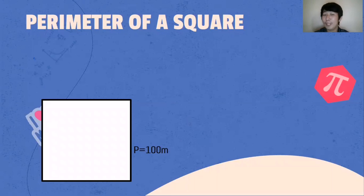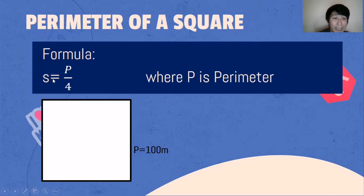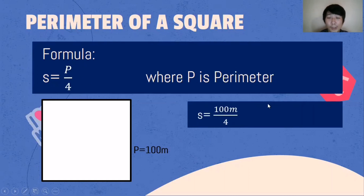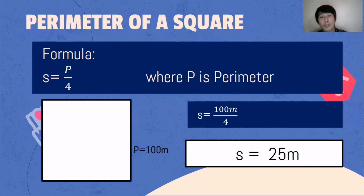Next, what if the perimeter is given and the side is missing? The formula to be used is: Side = Perimeter ÷ 4. For example, the perimeter is 100 meters divided by 4, which is 25 meters. To find the perimeter of a square, simply multiply 4 by the given side; to find the side, divide the perimeter by 4.